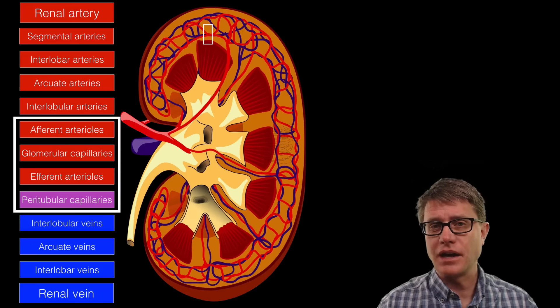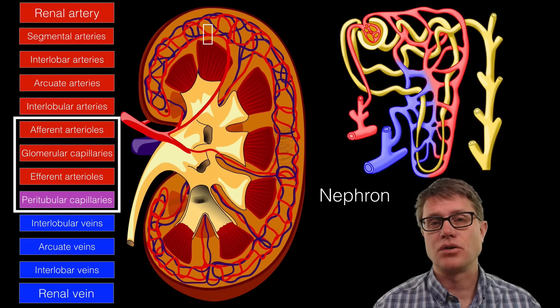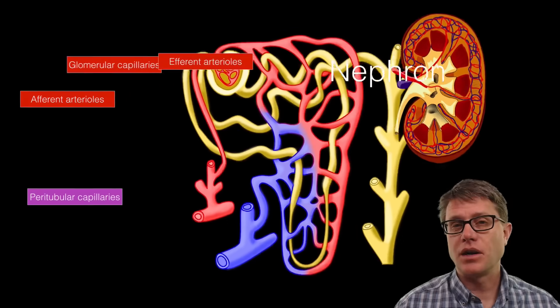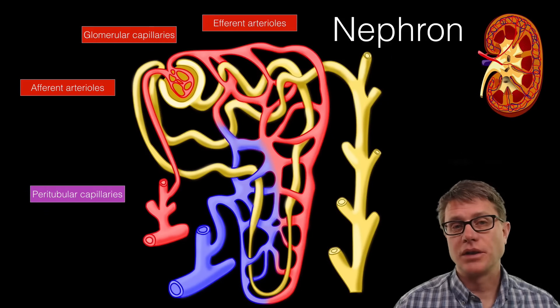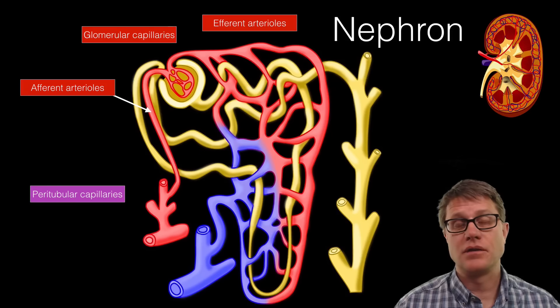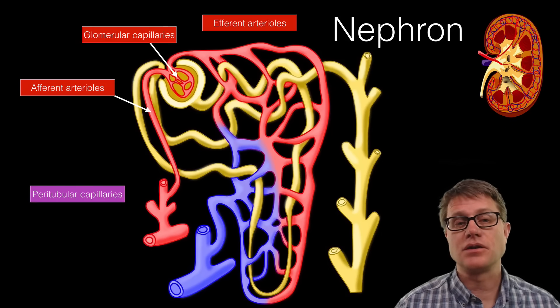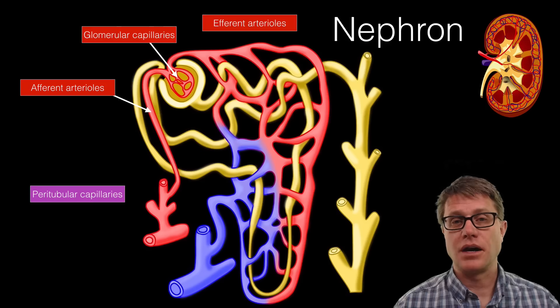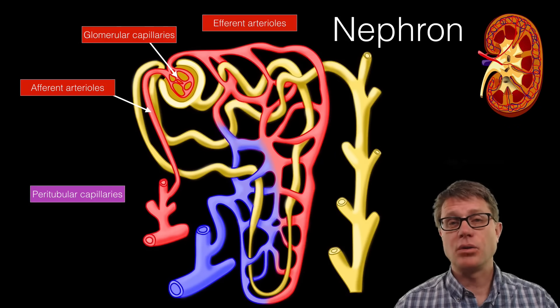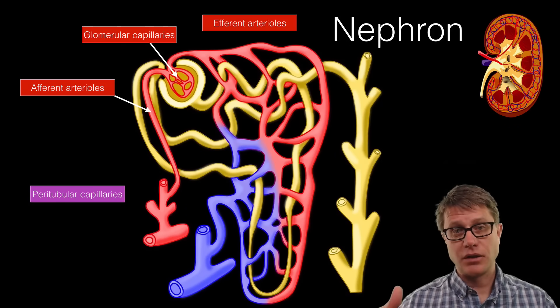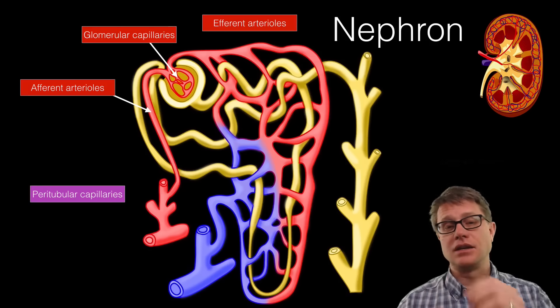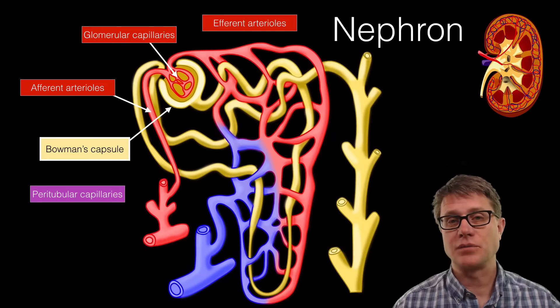Let's zoom into the functional unit of the kidney, which is the nephron. Blood flows into the nephron through the afferent arteriole, then it goes into the glomerulus or glomerular capillaries. At this point you essentially have a dead end. The blood is flowing in and comes to a dead end inside something called the Bowman's capsule.